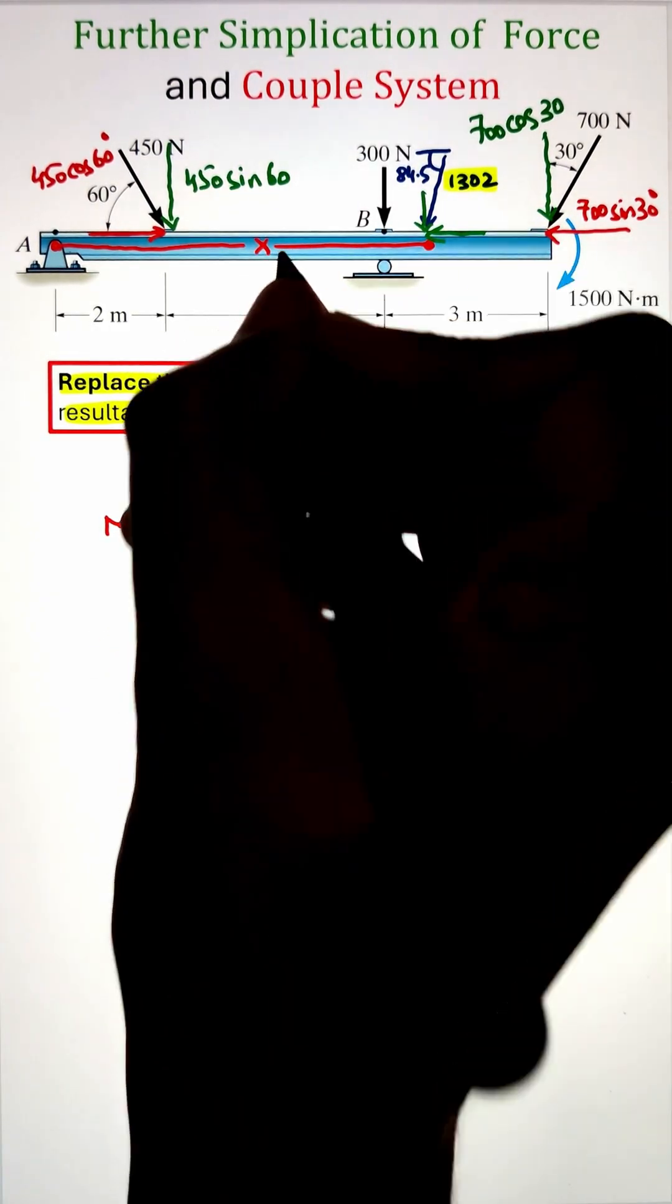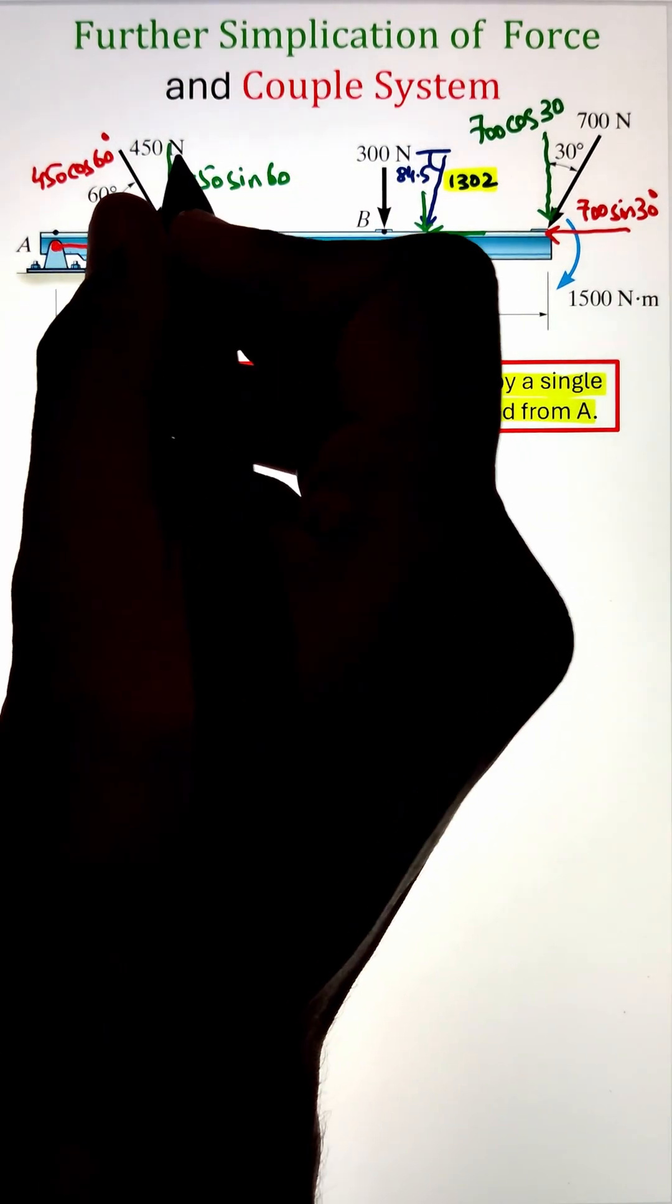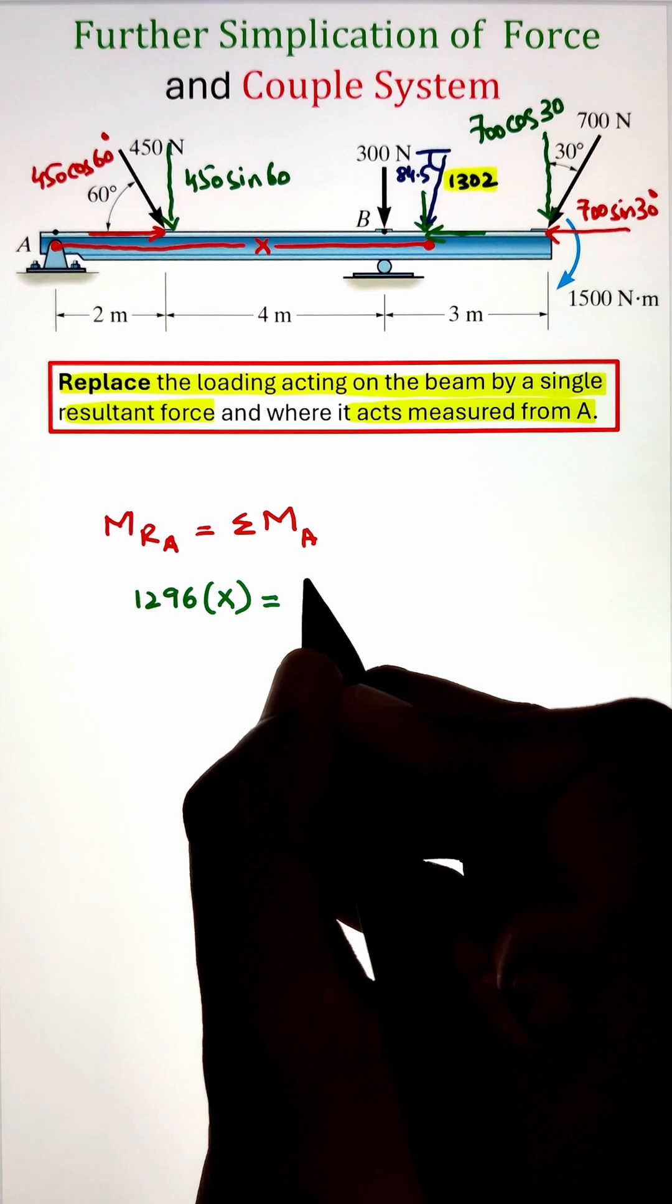So the resultant force moment with respect to point A will be 1296 times x. Whereas for the individual forces component, only the y component in this case is going to create the moment as the x component of all these forces are passing through the line of action of point A.